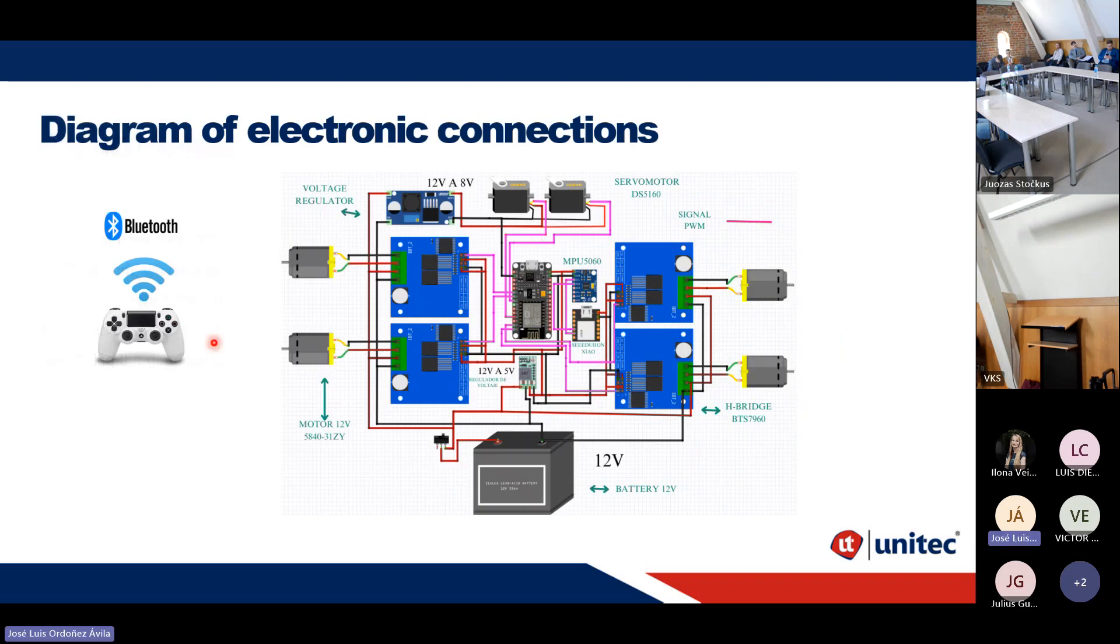Then we have this diagram connection. We teleoperate the robot using this PlayStation controller via Bluetooth. This communicates with an ESP32 as the master controller. We use an MPU 6050 so we can see how the center of mass of the robot behaves. Then we have a Seeeduino that controls the four speed controllers for the motors. These are DC motors that receive a PWM signal. We also have the servo motors that control the orientation of the robot. This goes to two volts battery so the robot can move.